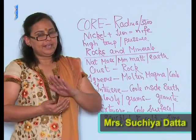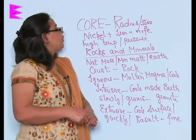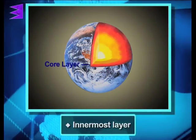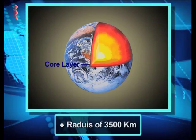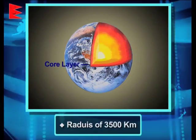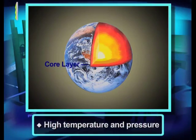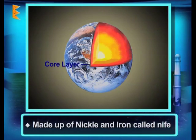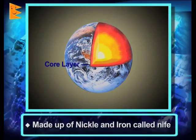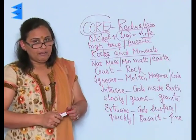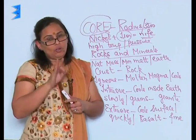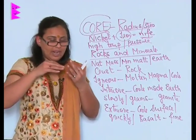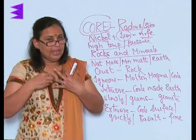Now let's talk about the core, the innermost layer of the earth. It has a radius of around 3500 kilometers. Because it is deep inside the earth, it has very high temperature and pressure. This layer is made up of nickel and iron, and is therefore called NIFE. So the three major layers are: the crust (uppermost), the mantle (middle), and the core (innermost).